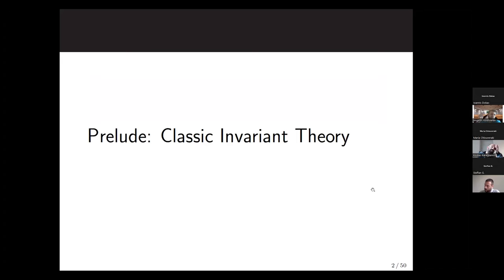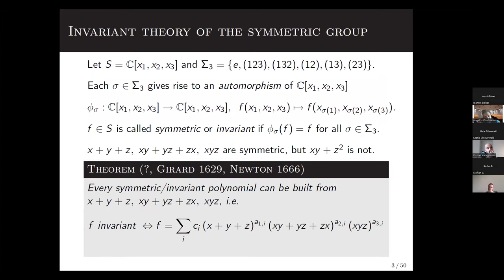Let me start with a prologue — a prelude on classical invariant theory that dates back centuries. Maybe the first example in the literature is considering actions of the symmetric group on three letters — permutations of elements one, two, three — on a polynomial ring in three variables.